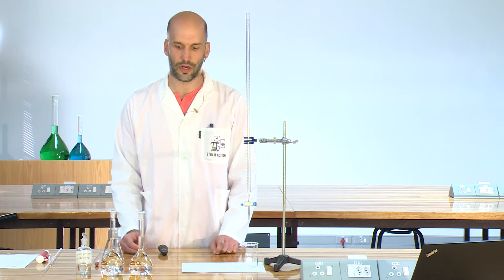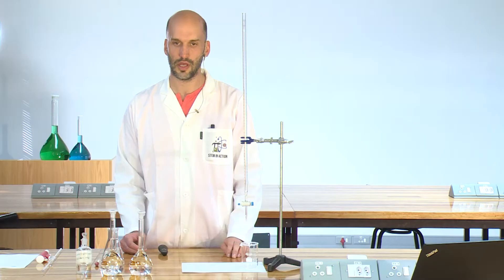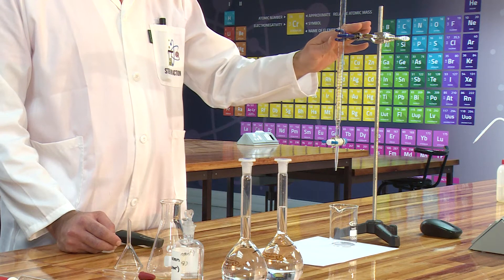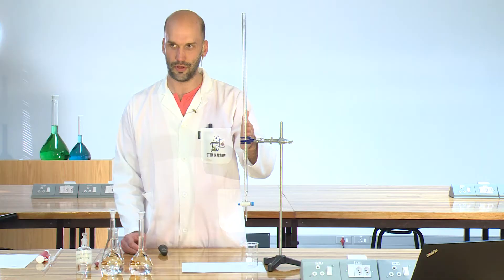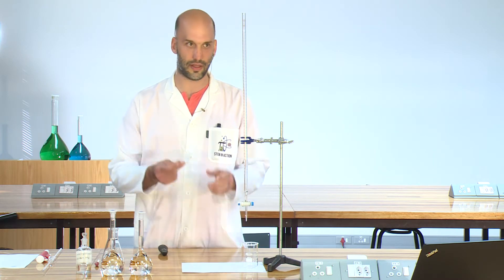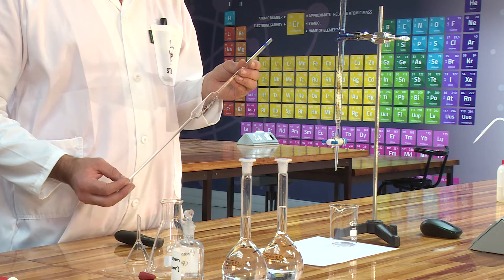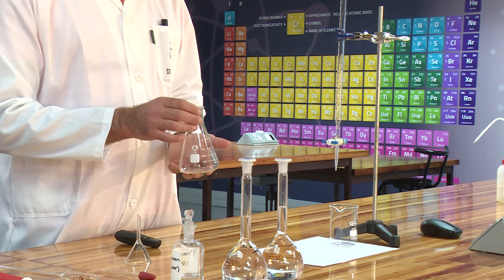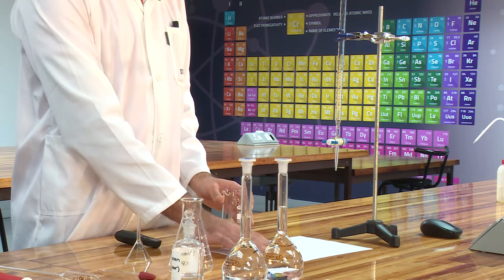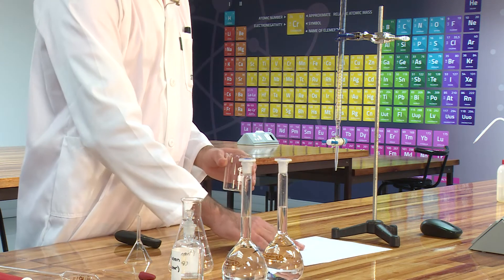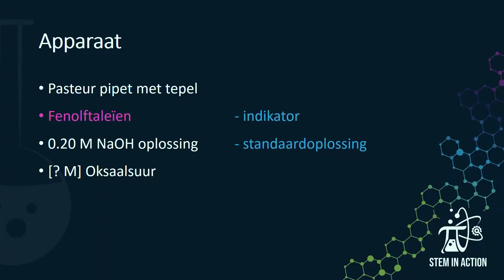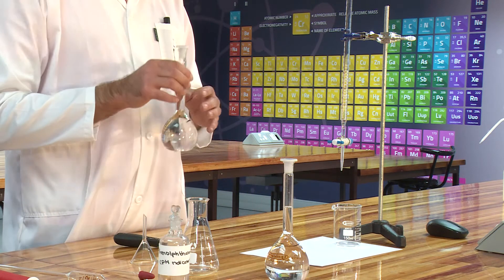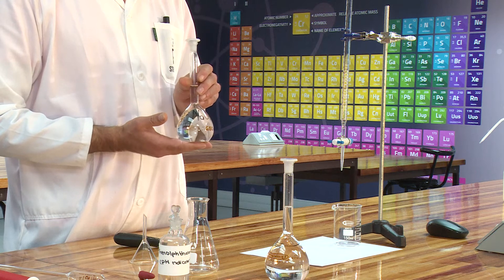For this experiment, the following apparatus is needed: retort stand, retort clamp, 50 ml buret, a klein rechter (small funnel) for the buret, 25 ml pipette, pipette pump, a 250 ml conical flask (kegelfles), white paper, a 150 mm glass beaker, a Pasteur pipette with a teat, for the indicator, and a standard solution of 0.2 molar sodium hydroxide.